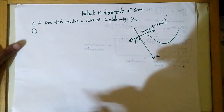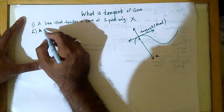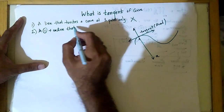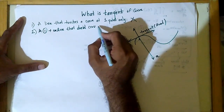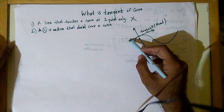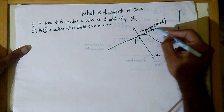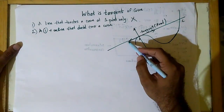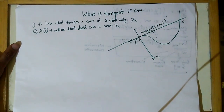Then people say it must also be a line that does not cross the curve. But suppose this curve extends further — if I extend the tangent line, it crosses the curve at another point, say point B. Does that mean this line is not a tangent? No, it is a real tangent. So this argument also does not hold good.